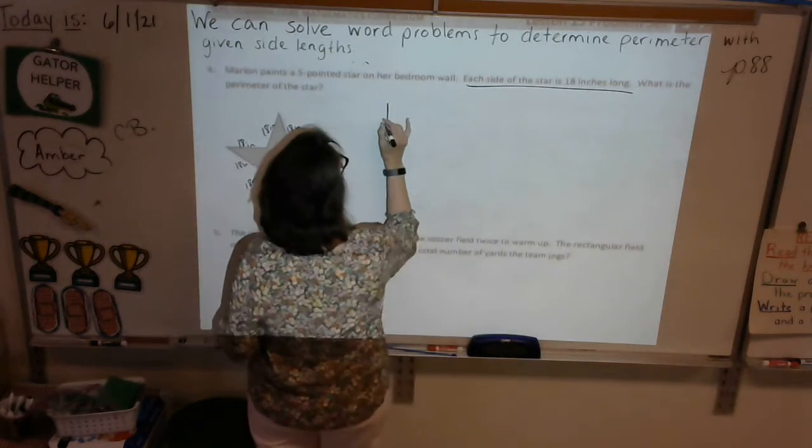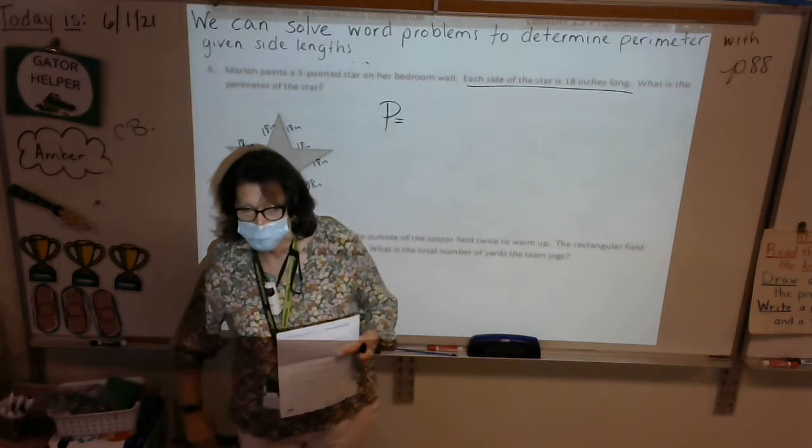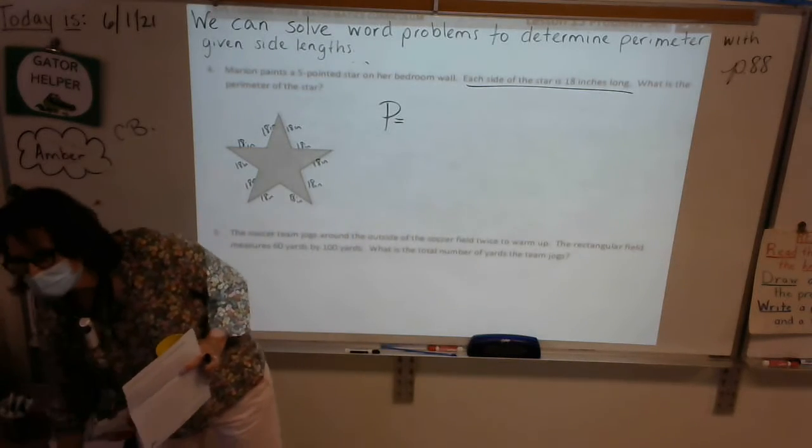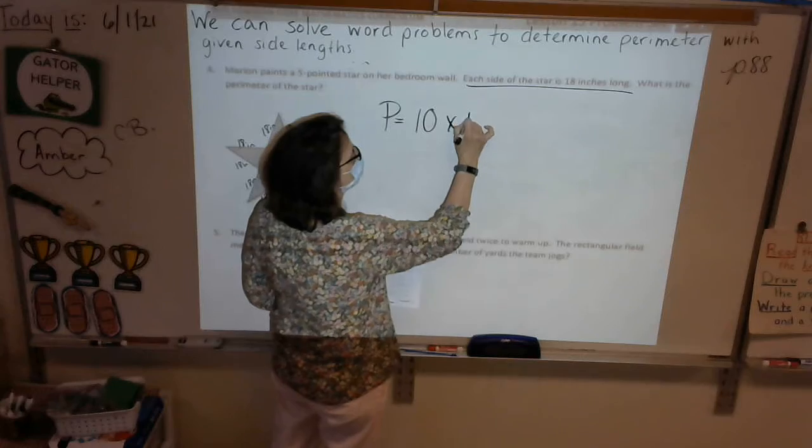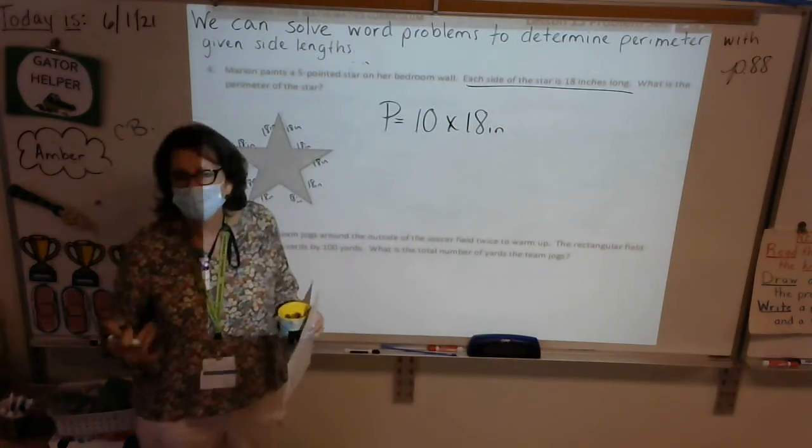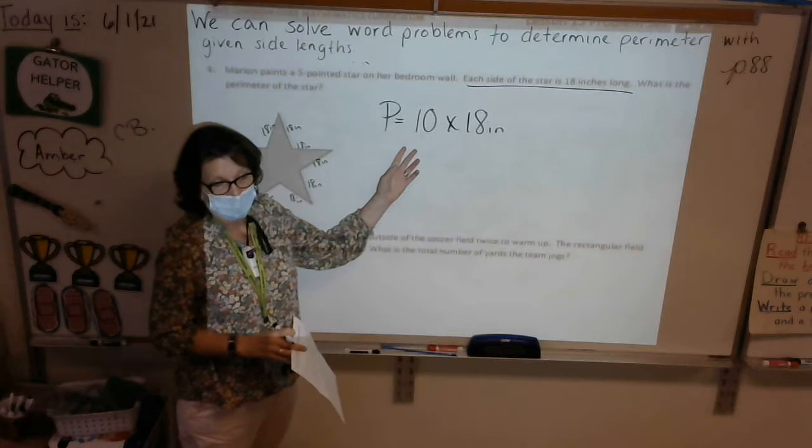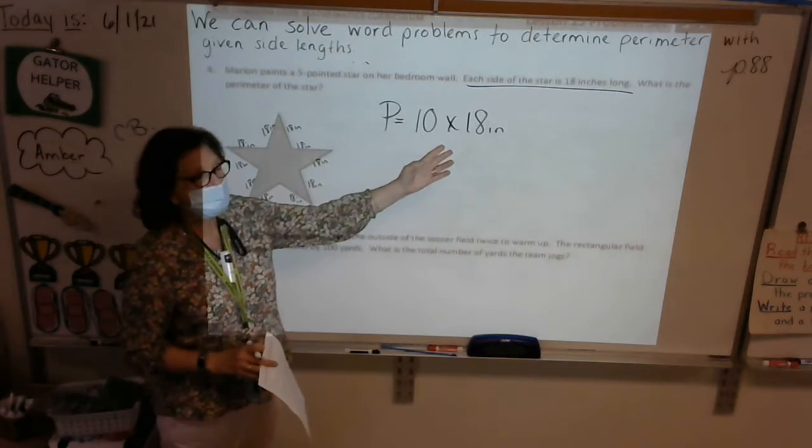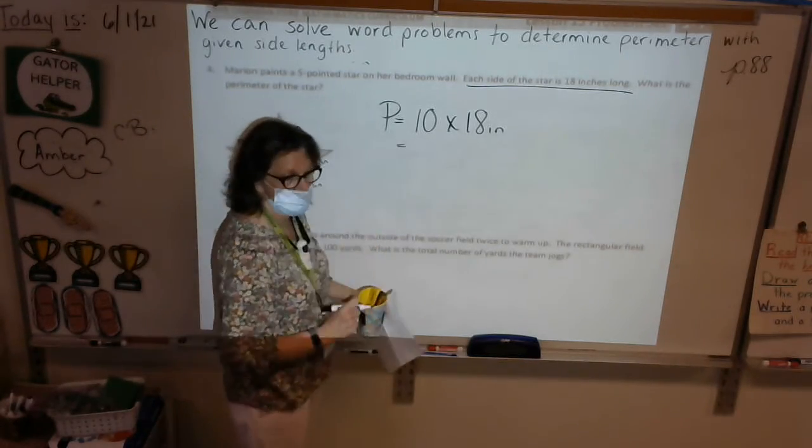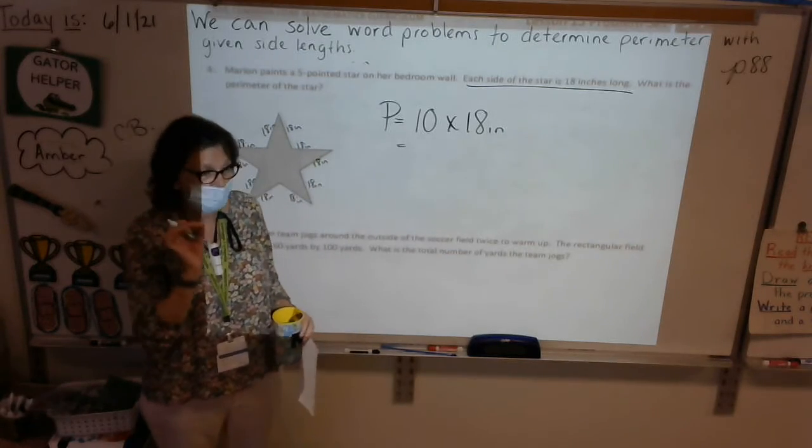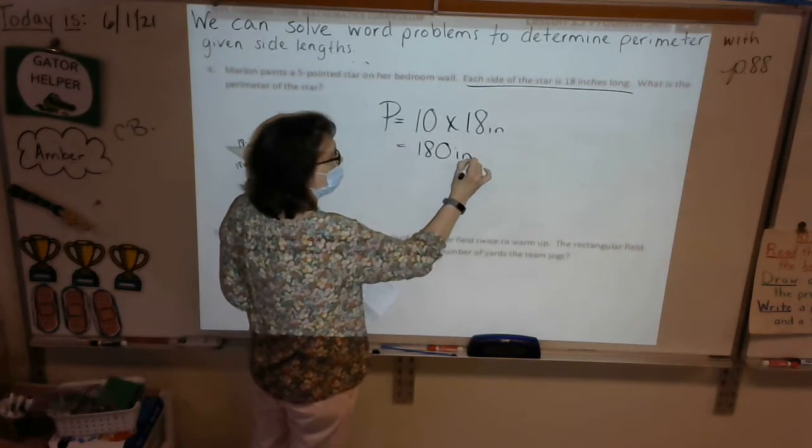So what number sentence will we write for this? Well, I certainly hope I'm not going to add 18 ten times. What would be the quickest, easiest way to find the perimeter of this star? Valerie, P equals what? P equals 18 times 10 or 10 times 18. Yeah, and I'm going to put 10 times 18 inches because I always like to put the number of groups first. I just like to be consistent with that. My brain likes consistency. Okay, so 10 times 18. What does 10 represent? The number of sides. What does 18 inches represent? The length of one side. So now 10 times 18, that's easy peasy, lemon squeezy, right? When we multiply by 10, what do we do? Just add zero. So 10 times 18, I'm going to take 18 and add zero, and I will get 180 inches.